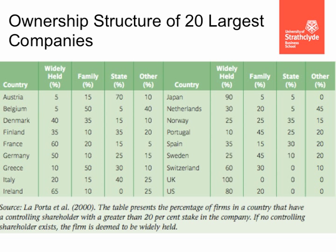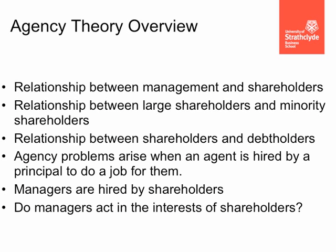So, a quick overview. Agency theory is the relationship between managers and shareholders — that's a type 1 agency relationship. It's also the relationship between large shareholders and minority shareholders — that's a type 2 agency relationship. But there are other relationships too, for example shareholders and debt holders. I'd like to finish by asking: do managers act in the interests of shareholders? That's something to think about. Thank you.